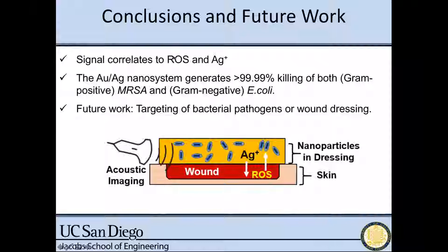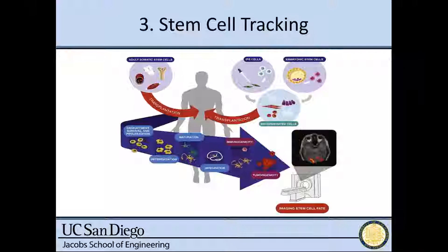Future work in this area will continue correlating this natively produced ROS — endogenously produced reactive oxygen species — to the silver concentration. We're getting at least three log orders of killing, and I envision moving this into a bandage-like design where ROS released from the wound causes silver from nanoparticles in the dressing to be released back into the wound, and this whole process can be monitored by acoustic data.